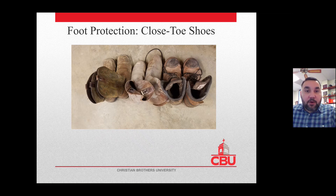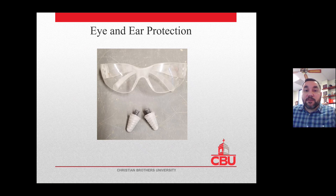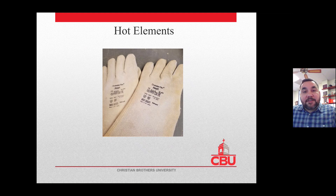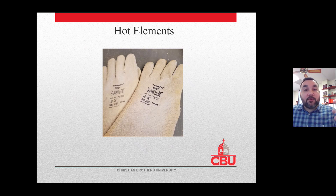Foot protection means always wearing closed-toed shoes — and ideally steel-toed boots — in a lab setting. For eye and ear protection, you may need safety glasses or goggles and earplugs or ear muffs depending on the experiment, class, and setting. For hot or cold elements, you need proper protection such as gloves or other clothing to protect your skin. Consult the person in charge of your lab for specific requirements.